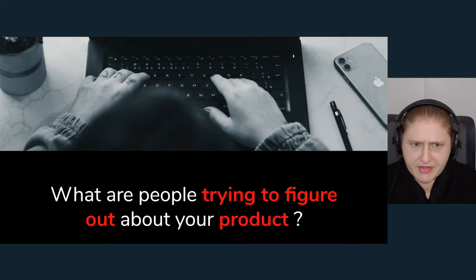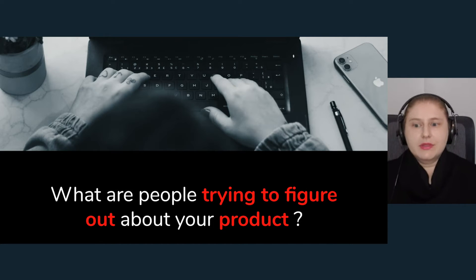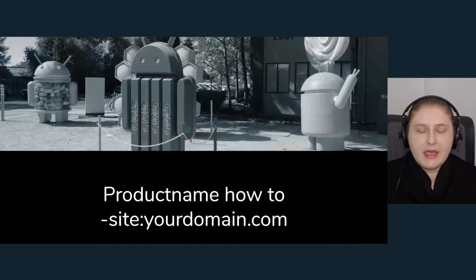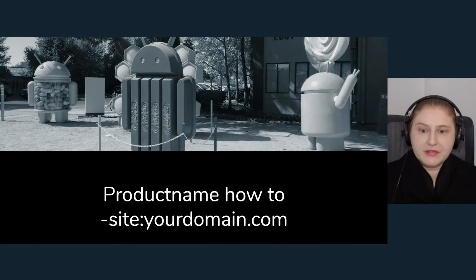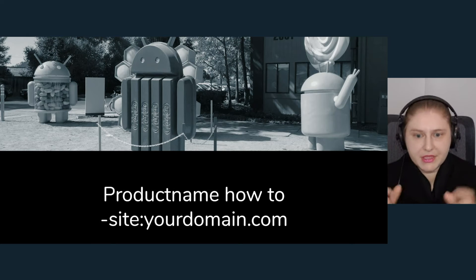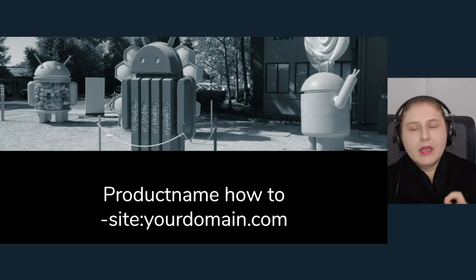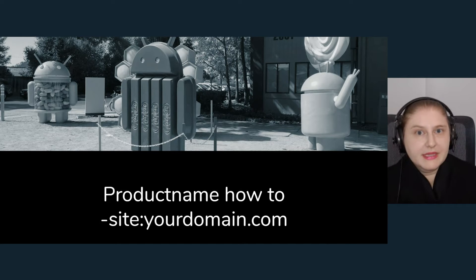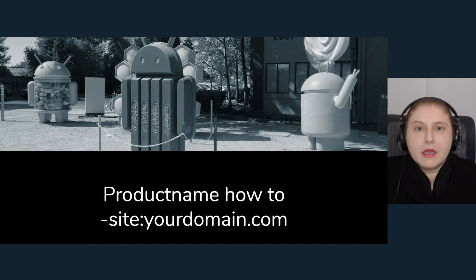What are people trying to figure out about your product? That's what you should be writing about, and this is something SEO can help with. First, go to Google and Google yourself: type in your product name (in quotes if it's too generic), then add "how to," and then append minus-site followed by your domain name. This way Google will search for everything about your product and questions asked about it, but not on your website — so you see what everyone else is talking about that you may not be paying attention to.